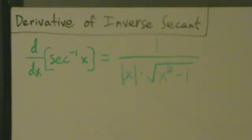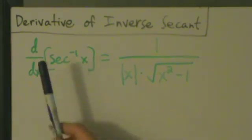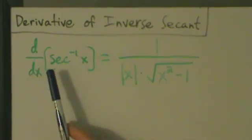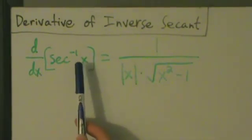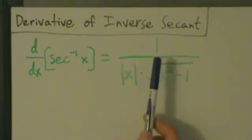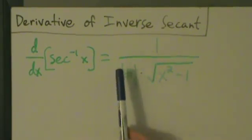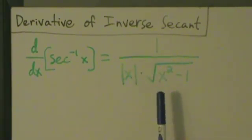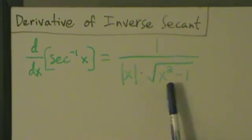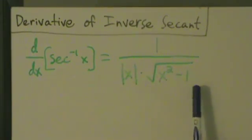Let's go ahead and talk about the derivative of the inverse secant function. We have d/dx of secant inverse of x equals 1 divided by the absolute value of x times the square root of x squared minus 1.